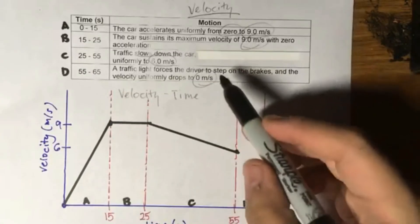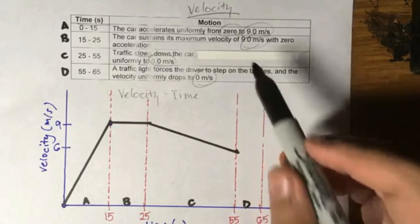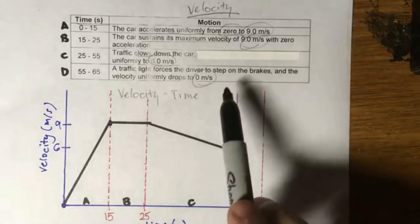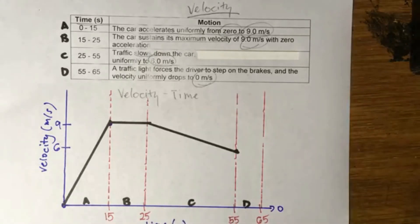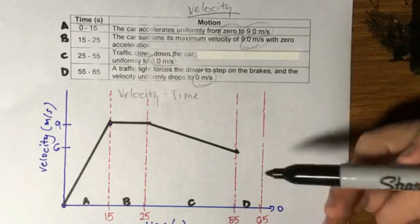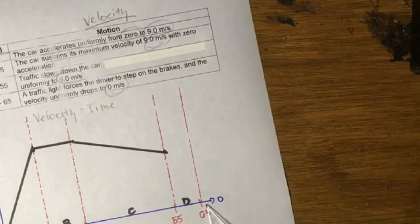And finally, so this one, probably the driver is just releasing the gas. This one is actually proactively stepping on the brakes and the velocity drops to zero. So eventually, the car grinds to a halt. So from 6 meters per second, you go back down to zero.